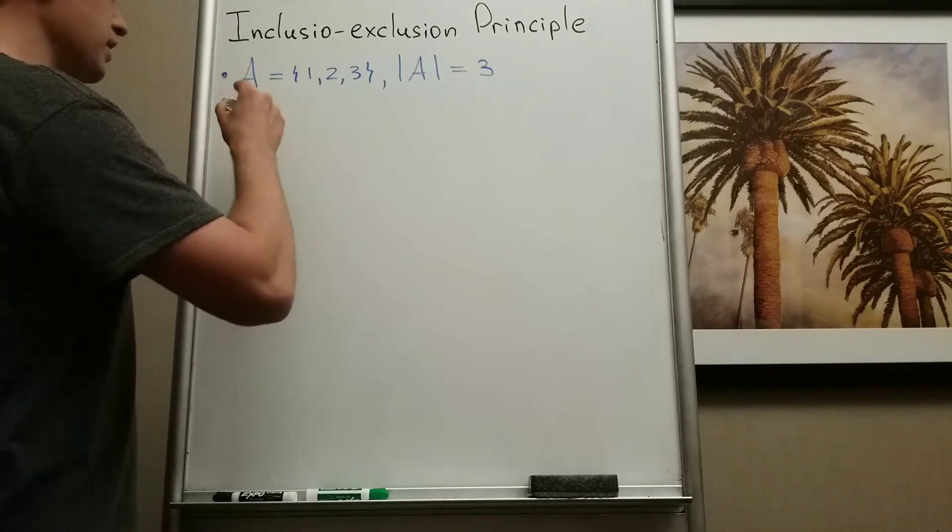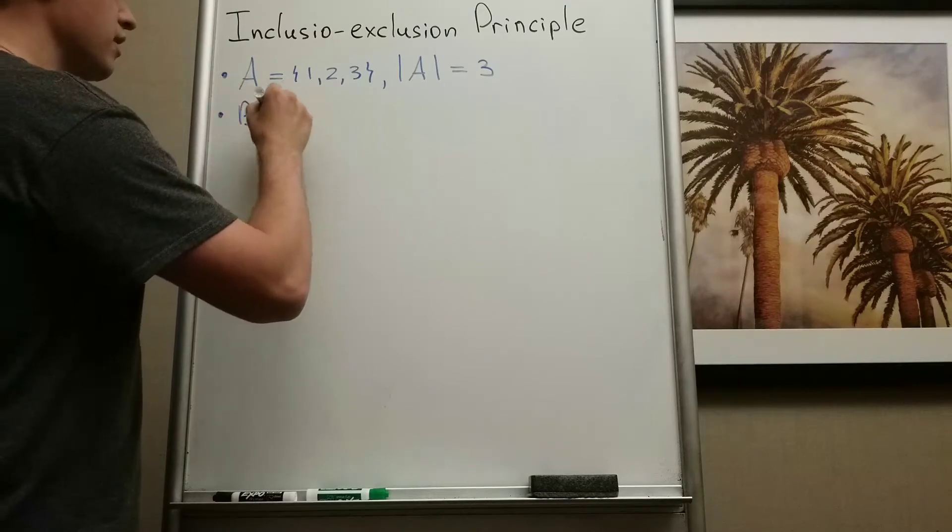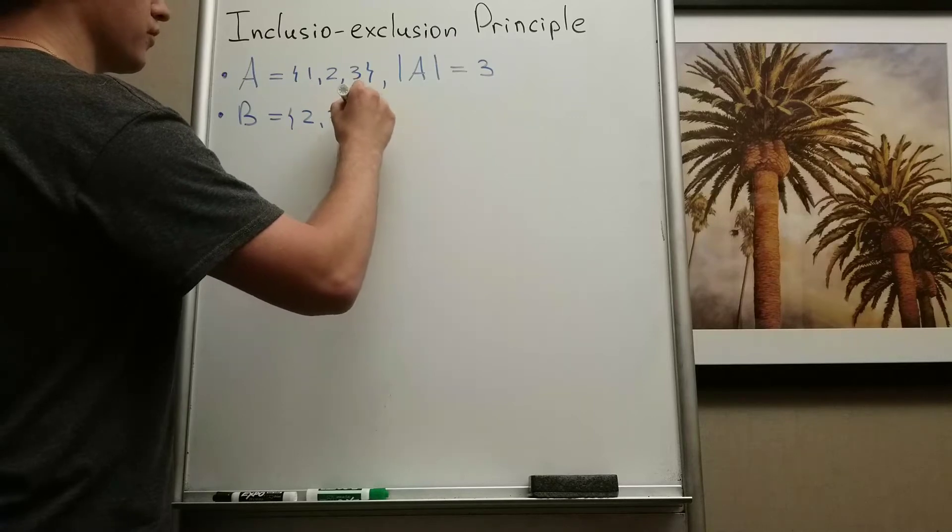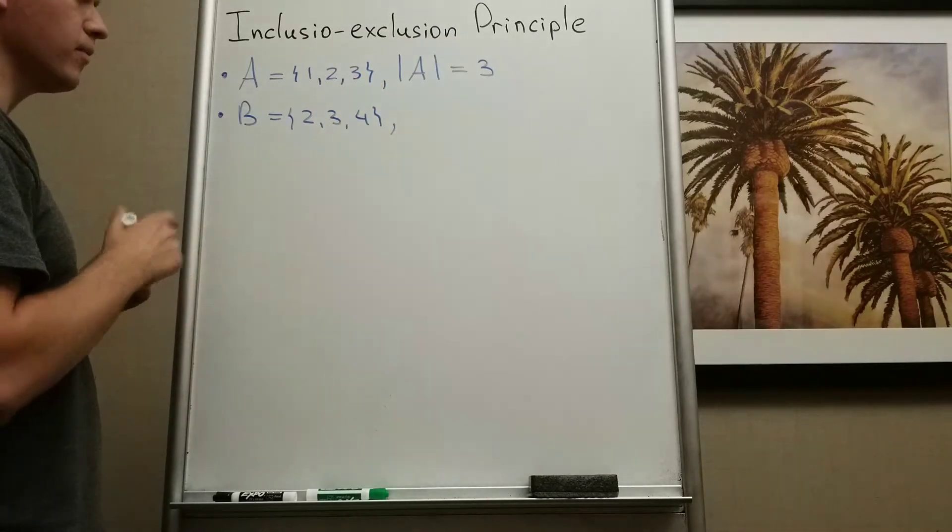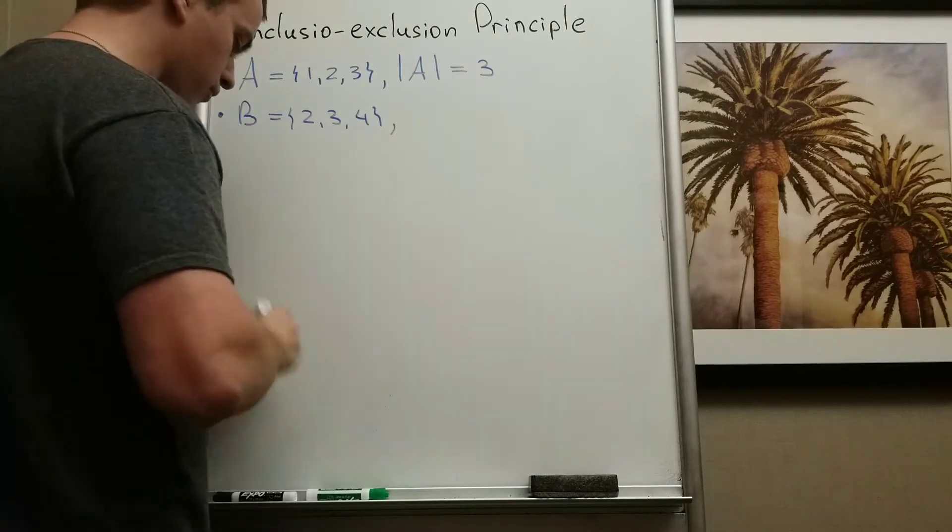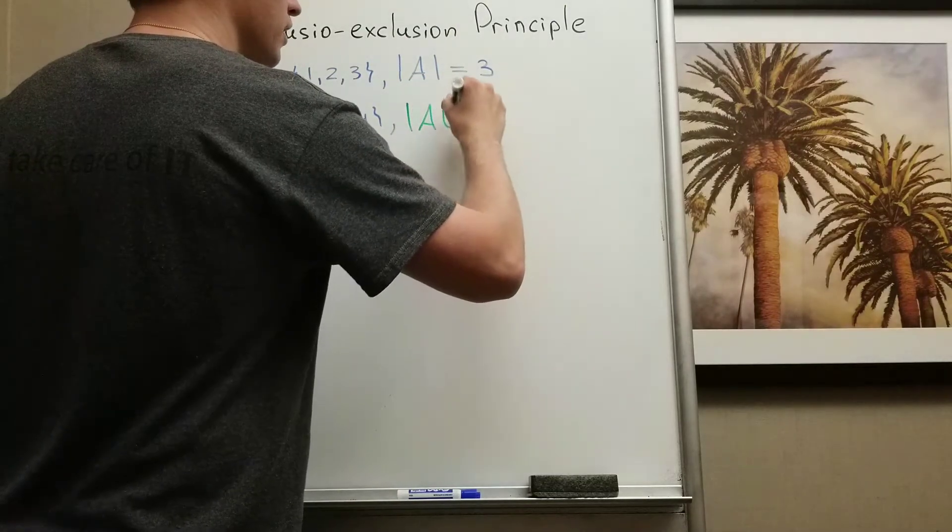But what if I have two sets? I have set A with elements 1, 2, 3 and set B with elements 2, 3, and 4. And I'm interested to find not only the cardinality of B, but I'm interested to find the cardinality of A union B.